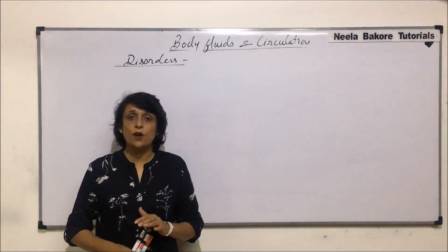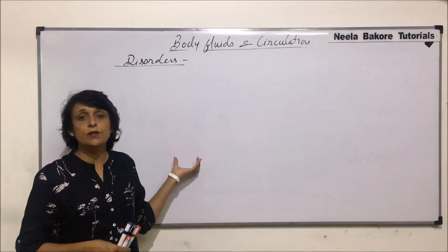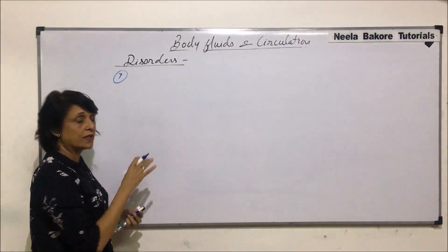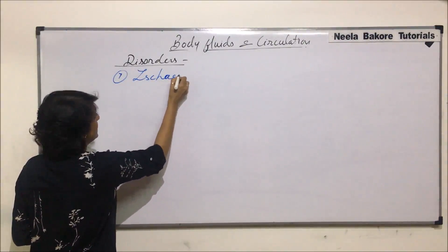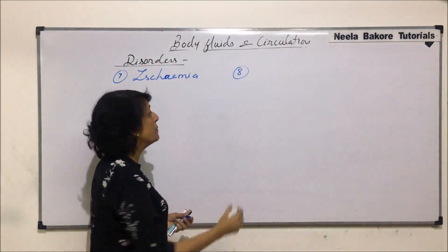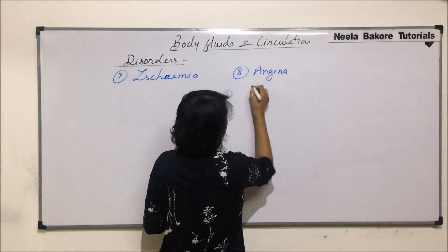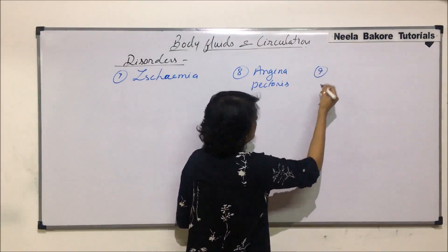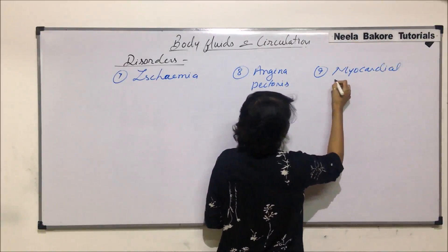In this section we'll talk about three more conditions which are again disorders related to the heart. The first one is ischemia, the next we will talk about angina pectoris, and then we will talk about myocardial infarction.